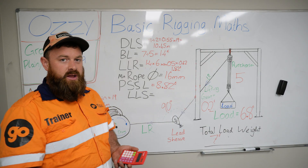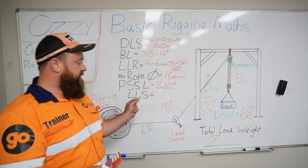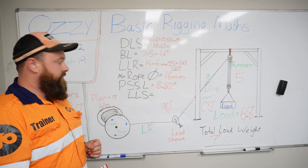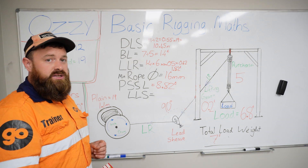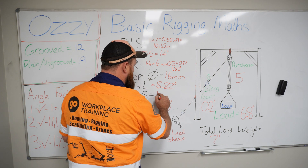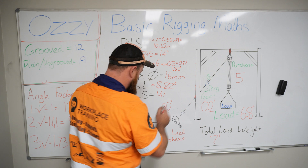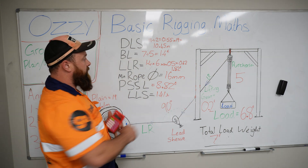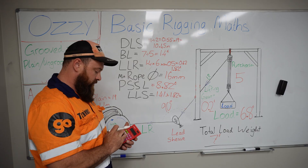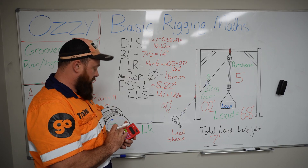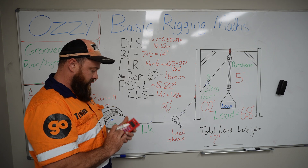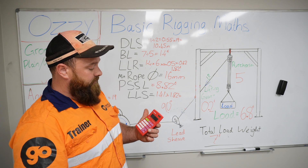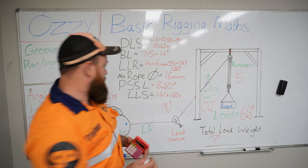Now we need to find out how much stress is in our lead line diversion sheave. We have a 90-degree angle here, and the angle factor for 90 degrees is 1.41. So 1.41 times our load in the lead rope, which is 1.82 tonnes: 1.82 times 1.41 equals 2.5662, which we round up to 2.57 tonnes.